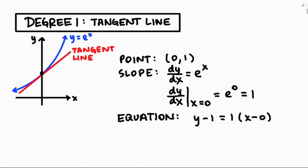Moving forward, when talking about Taylor polynomials we write our polynomials in ascending power order. So y minus 1 equals 1 times (x minus 0) simplifies to p₁(x) equals 1 plus x — that's the first-degree polynomial representing e to the x.